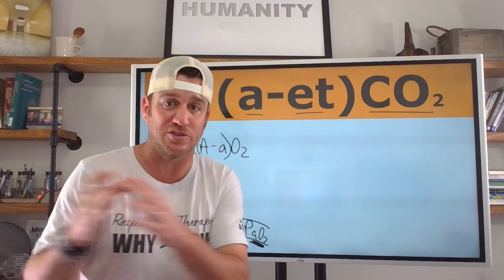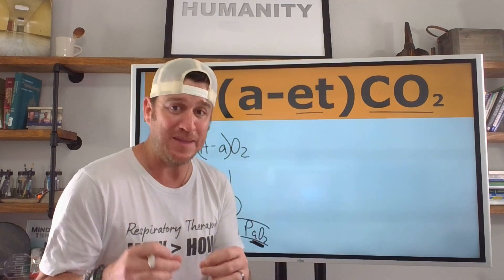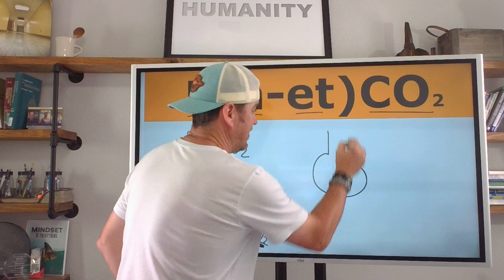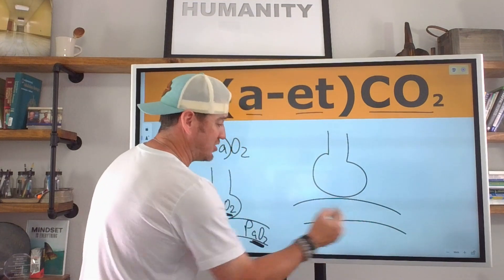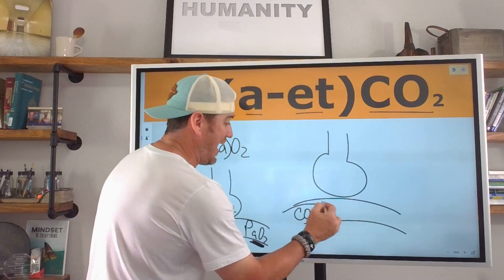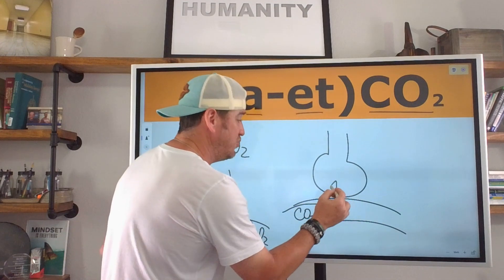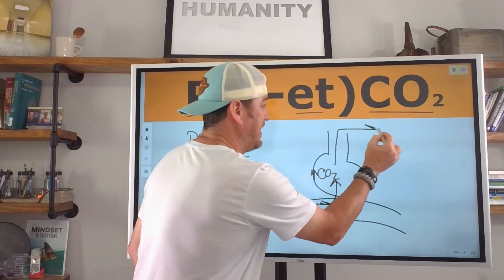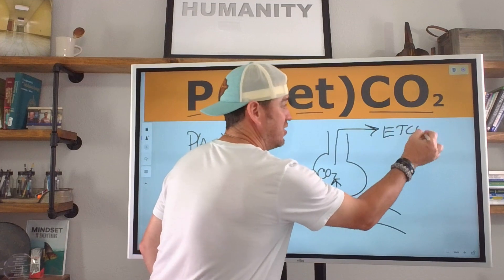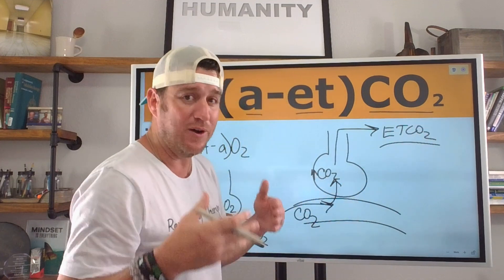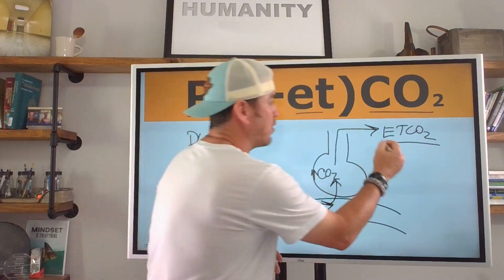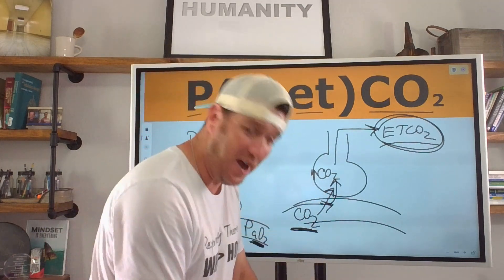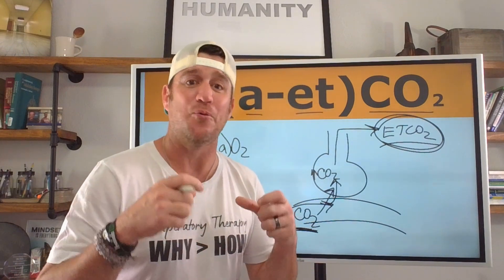The same concept applies to the arterial to end-tidal CO2 gradient. We know that CO2 comes back through and past the alveoli, and CO2 goes into the alveolar units. We exhale more CO2 from the alveoli, and this is where we measure end-tidal CO2. Can you get more CO2 exhaled than what came back and diffused into the alveoli? No, you can't. But the more important question is: why not? Why is end-tidal CO2 always less than arterial CO2?